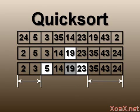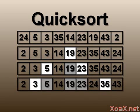This leaves us with the partition containing 2 and 3, and the partition containing 35, 43, and 24. We apply the partition step to these two sets. In this last step, the pivot 3 is selected in the first set, and the pivot 35 in the second set. After we partition these sets, the remaining sets all contain 0 or 1 elements and are therefore sorted. So we are done.